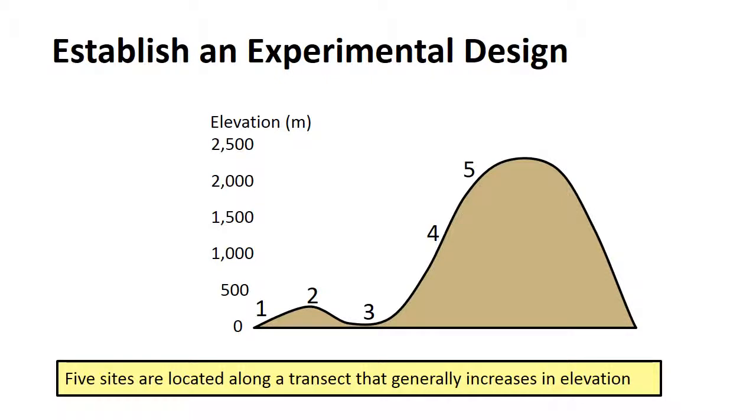In this example, our research design consists of an elevation transect with five sites. Our data consist of the occurrence of different tree species on these five sites. Our hypothesis is that there is no pattern in the similarities between sites.